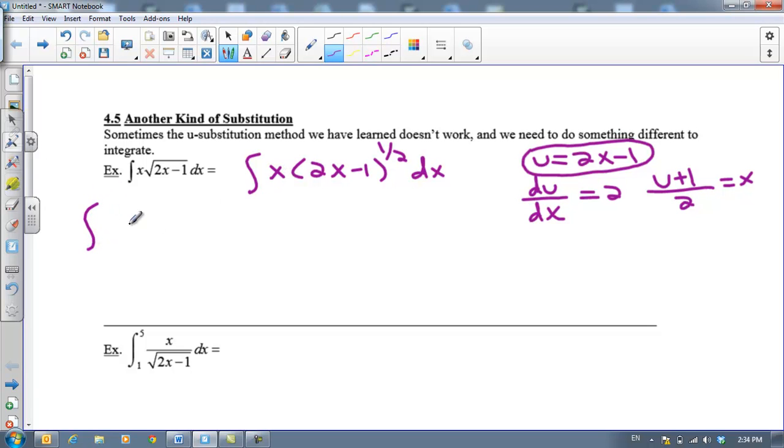And your substitution looks like this. The integral of x which we now know is (u + 1)/2 times u to the 1/2 power and then dx. So I guess we would write this as 1/2 du equals dx. So I've got 1/2 du. And now I can distribute this. I'm going to pull this 1/2 out with this other 1/2 and make it a 1/4.